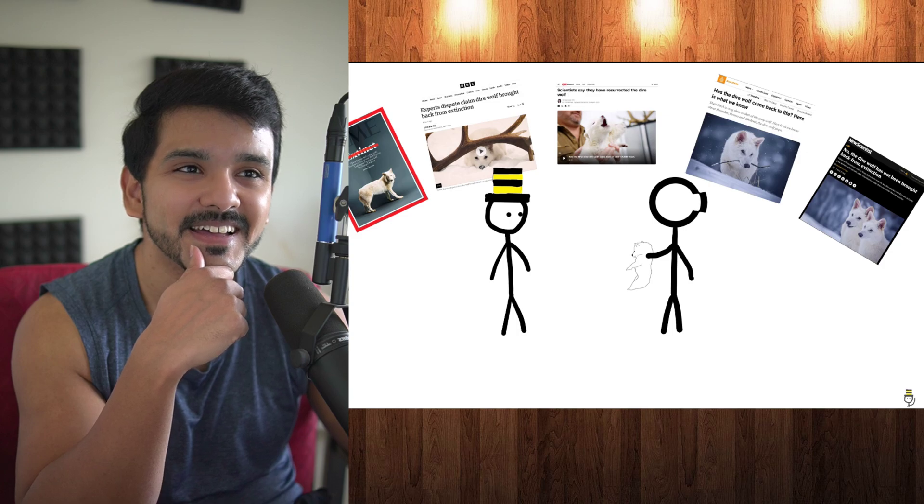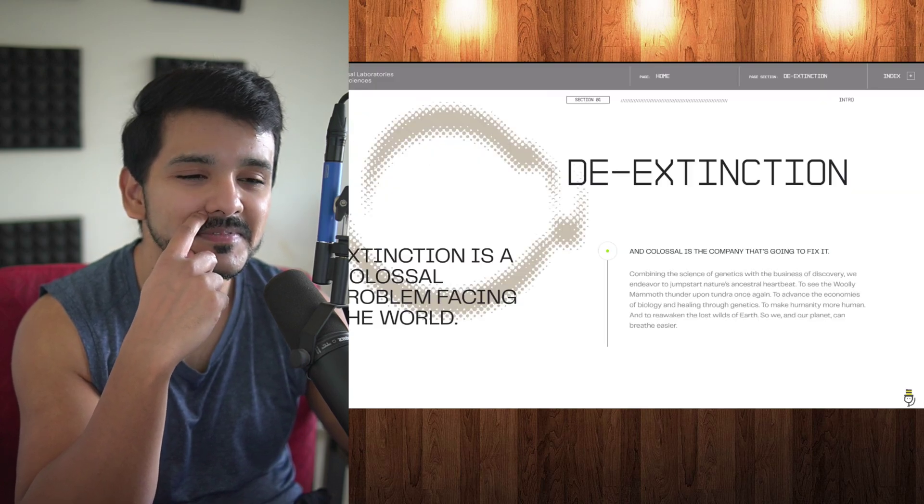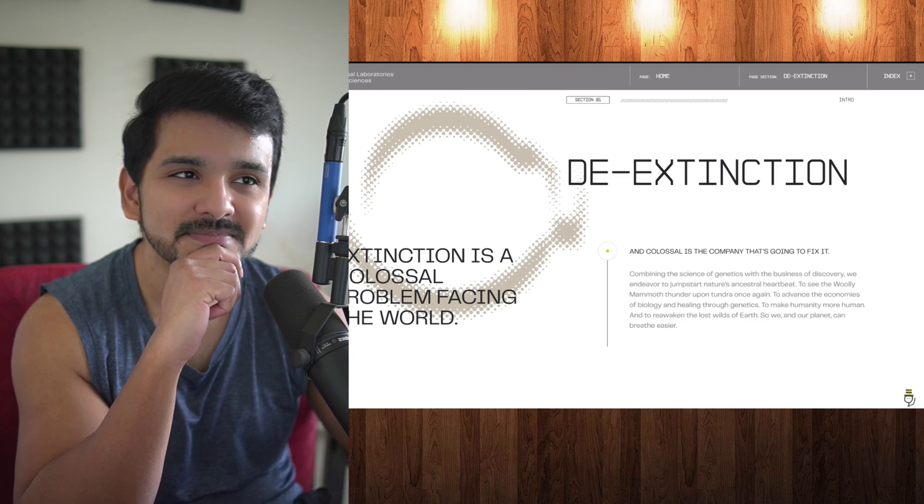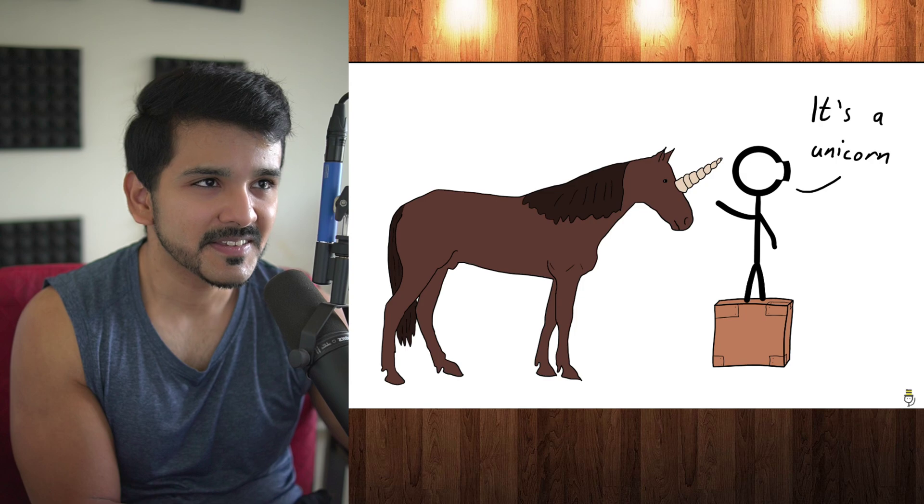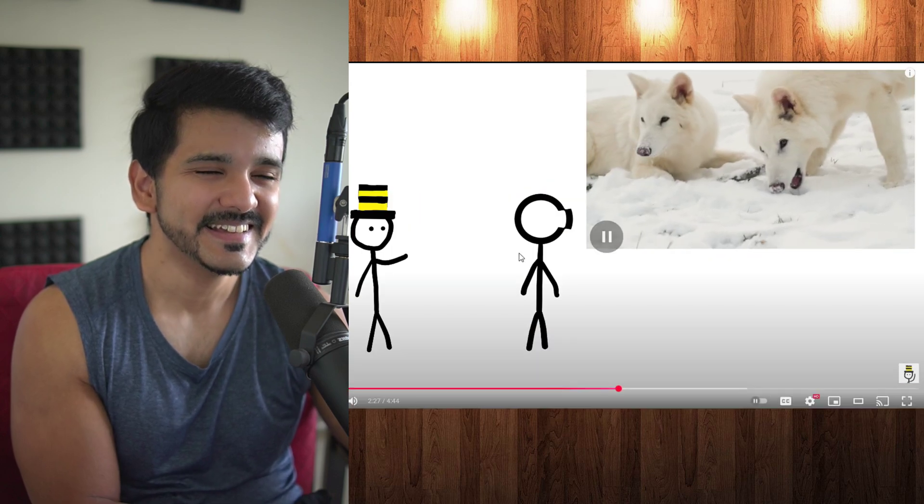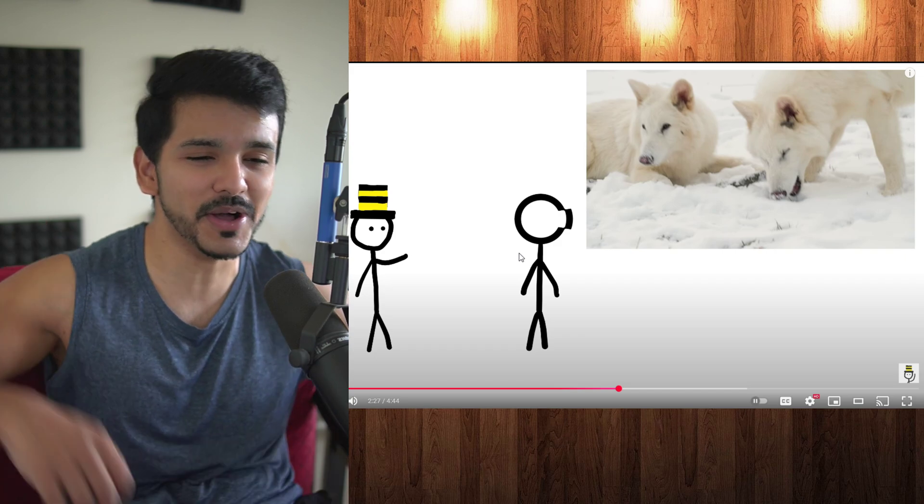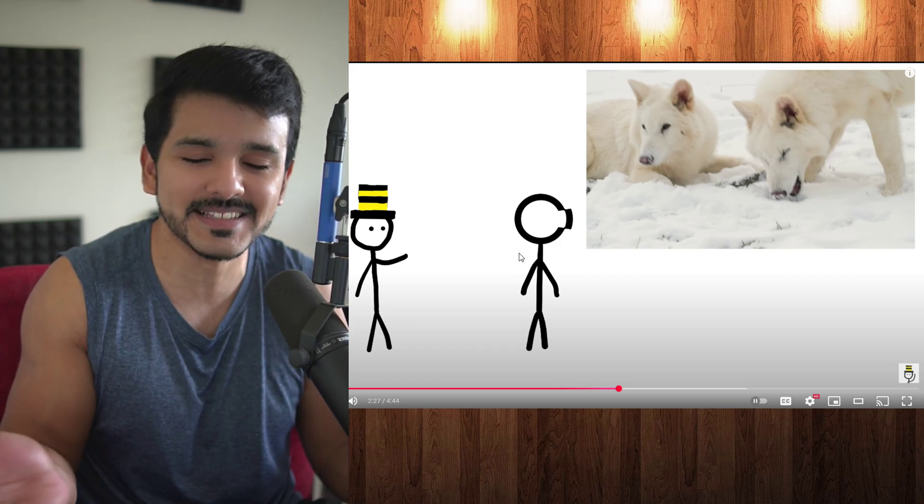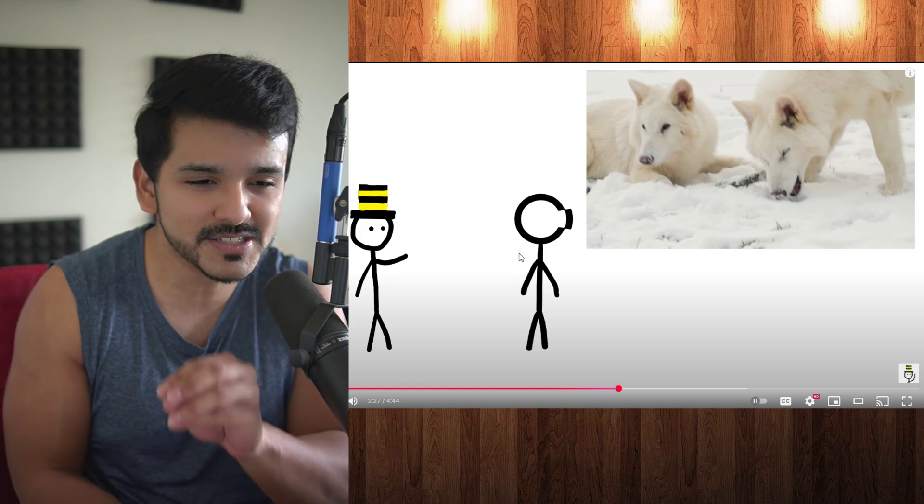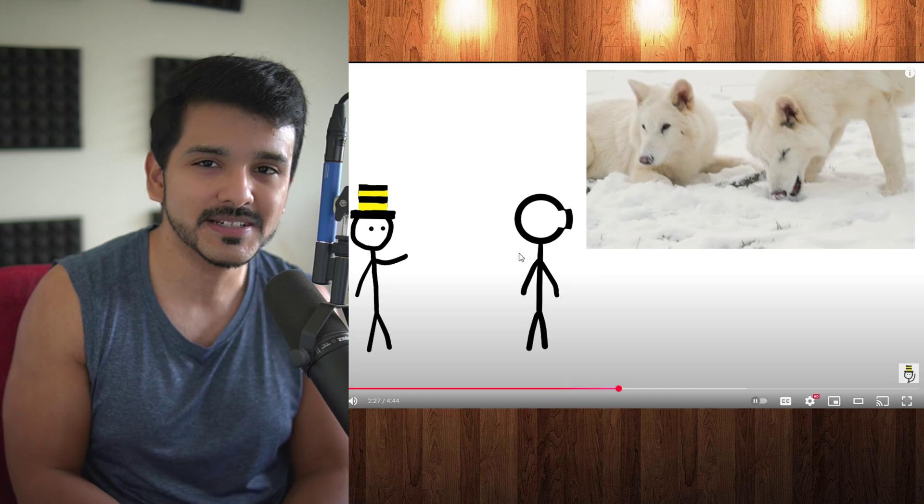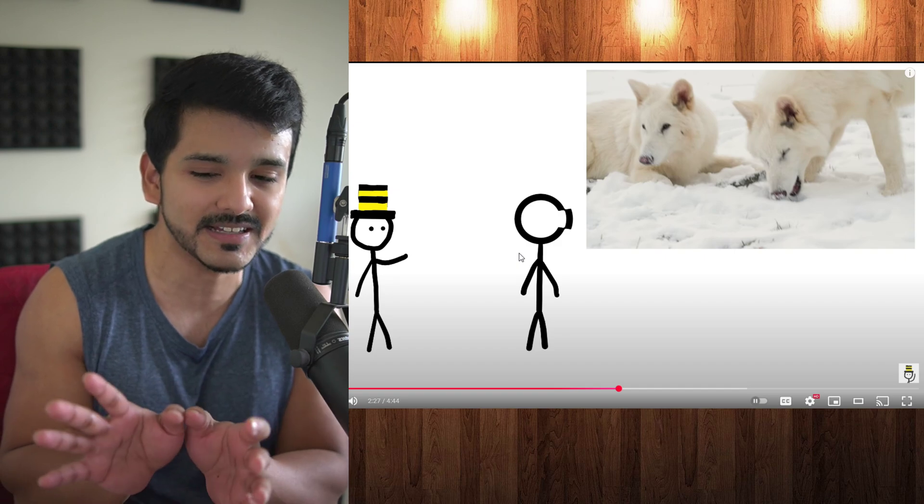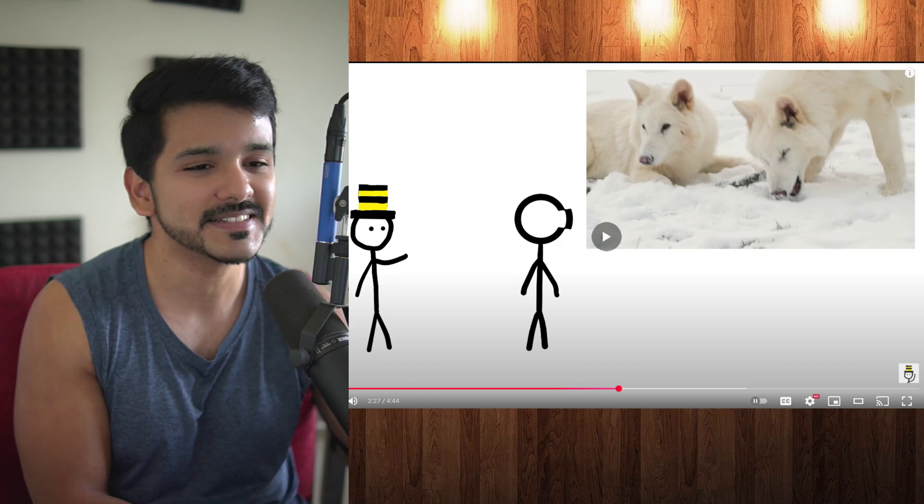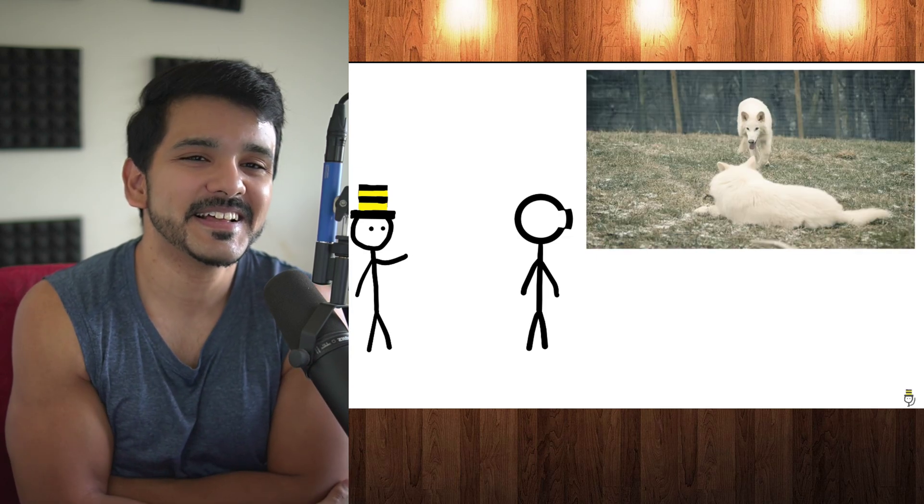They named this one Khaleesi, like in Game of Thrones. The critic says if you claim to have achieved de-extinction, people will think you've actually cloned something from ancient DNA or at least copied a whole genome, not just altered one species to kind of look like another. These muscle wolves are still a cool example of genetic engineering, they're just not direwolves. It's like somebody dressing up as a yeti. You edited something to look like direwolves, but is that direwolves?